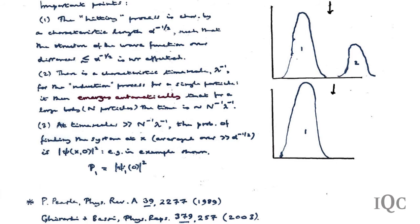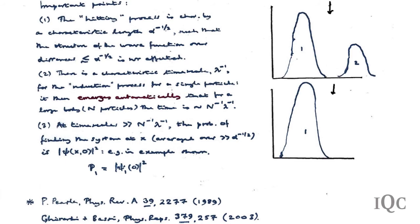One way of understanding how this works: when you examine in detail the physical processes involved, it is a continuous example of what probability theory calls a gambler's ruin process.